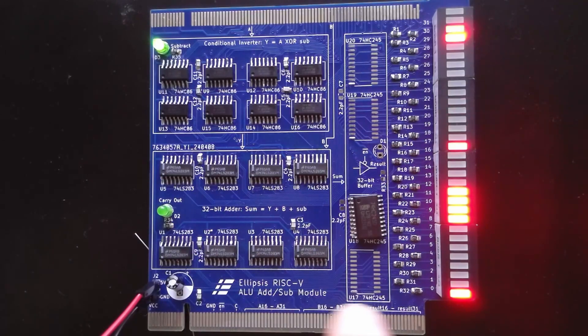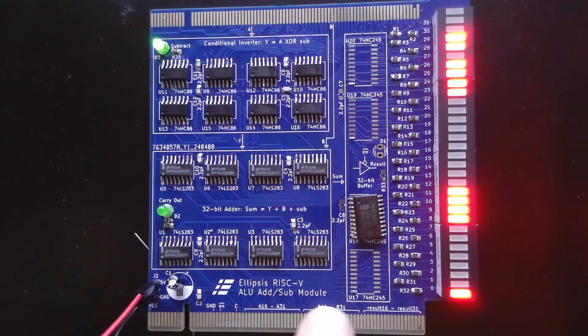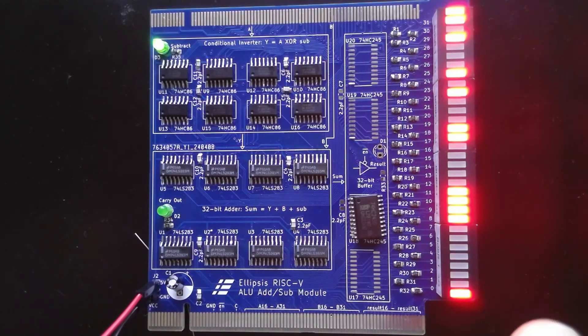But I need some way of driving these input pins here. So I need to specify the A and B values, each of which are 32 bits. So that's very difficult to control. You'll notice that if I just touch these pins here, then the output changes and that's because the pins are currently floating. So in the next video, I'll be building a module specifically for testing this and I'll drive the A and B inputs. I'll specify whether or not we are subtracting.